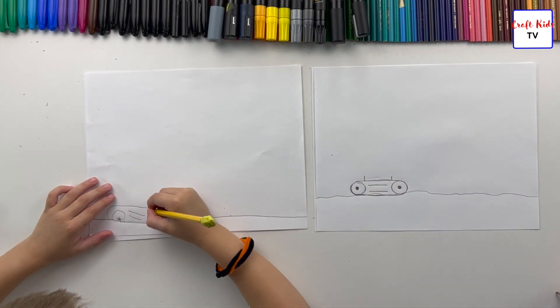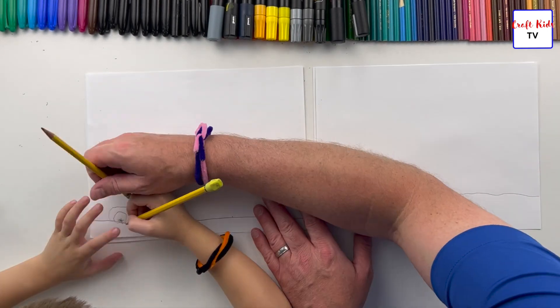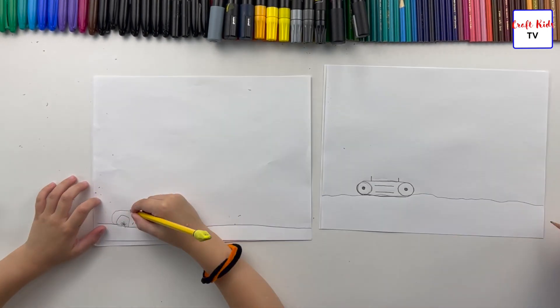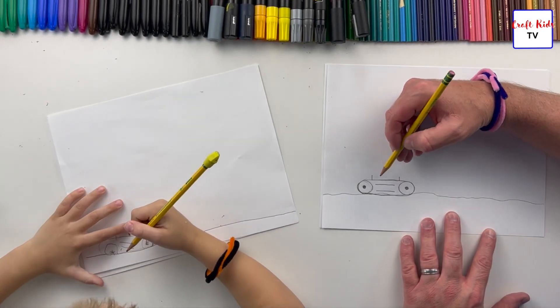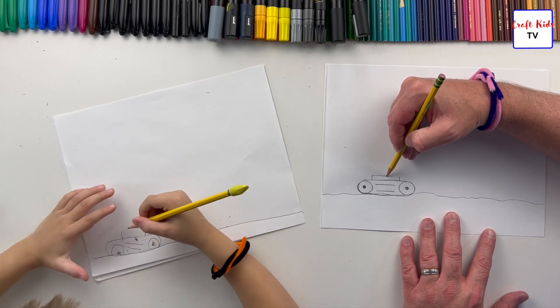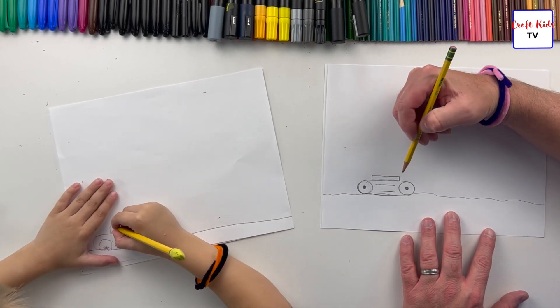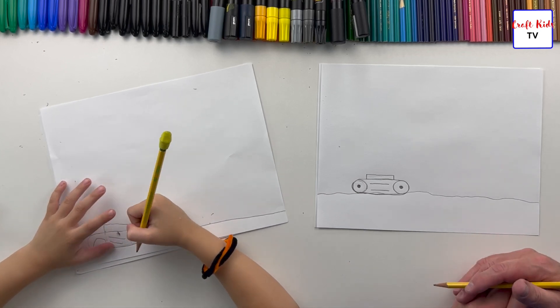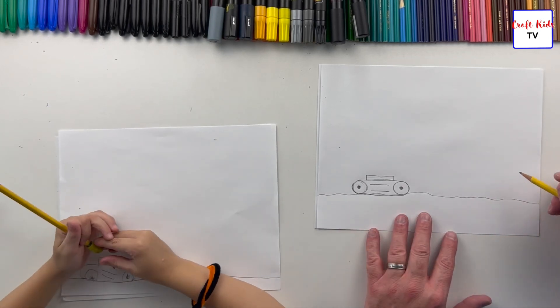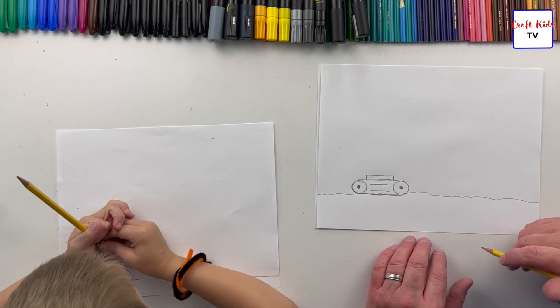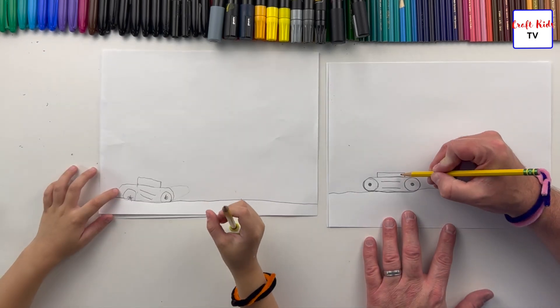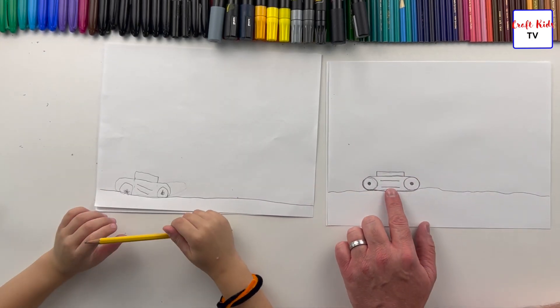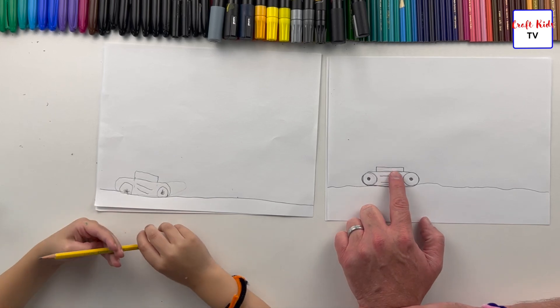You're going to draw a straight line up on both sides. Awesome. Now just connect straight across. Is it okay if we make mistakes, Odin? Yes, it's okay if we make mistakes. We're just trying to have some fun, right?